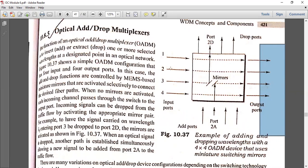When the mirror pair is activated, an incoming signal can be dropped. Here, in this case, the third input is used. When the third input path is activated, you can activate it so that the third input goes to the 2D port.